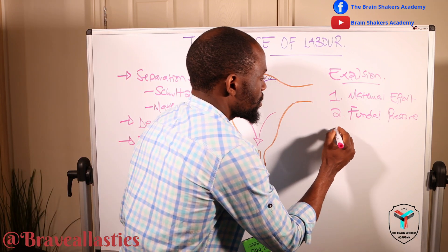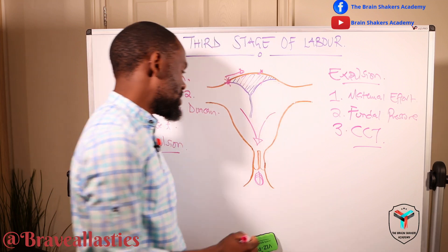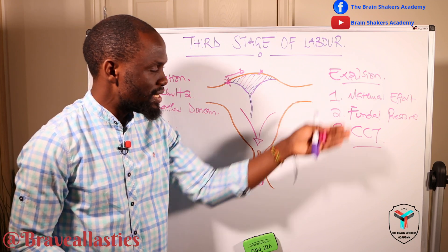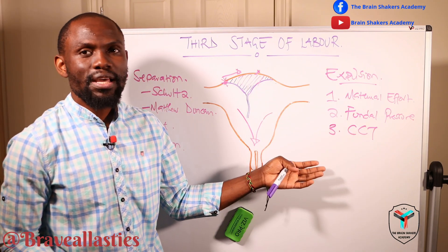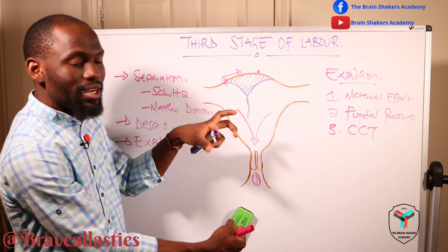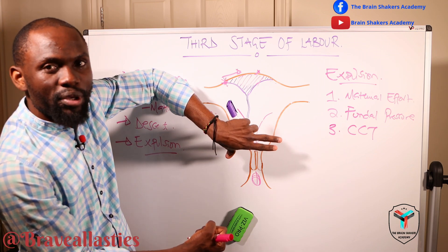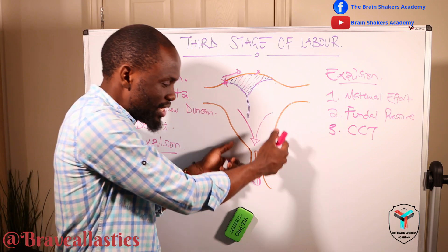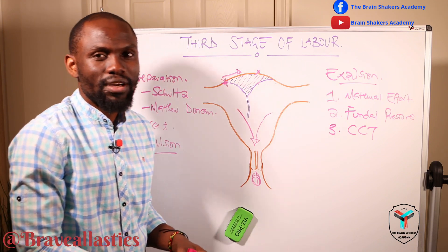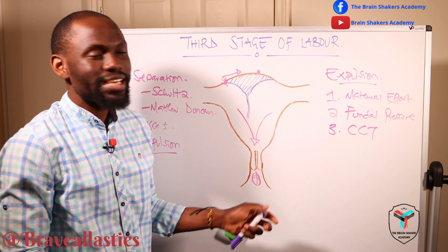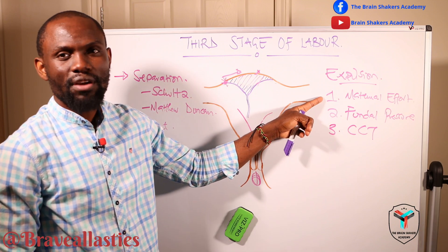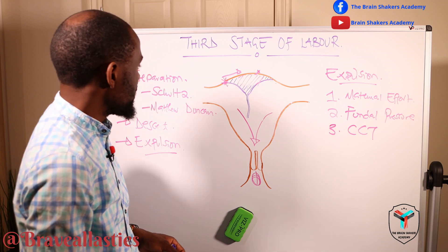The third method is what we call CCT, or controlled cord traction — also referred to as SCCT, steady controlled cord traction. This is the most favorable type of placental expulsion. You apply traction with your dominant hand while the non-dominant hand applies suprapubic pressure on the suprapubic region, so that you avoid uterine inversion or prolapse, and you end up with delivery of the placenta. Controlled cord traction is the most favorable method and may also be combined with maternal effort as you deliver the placenta.